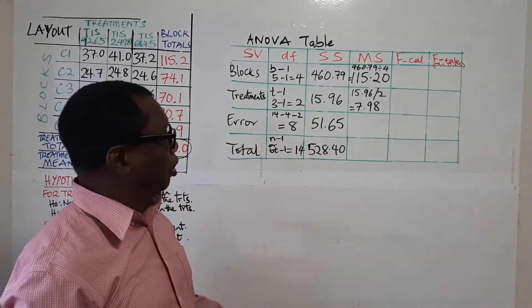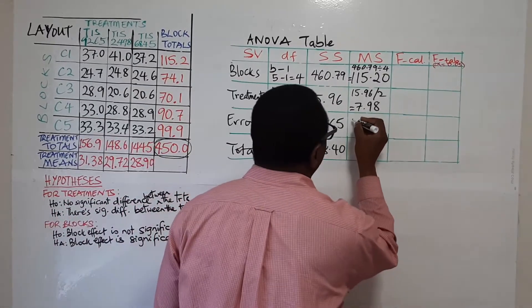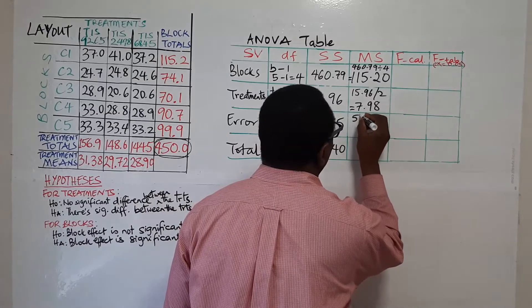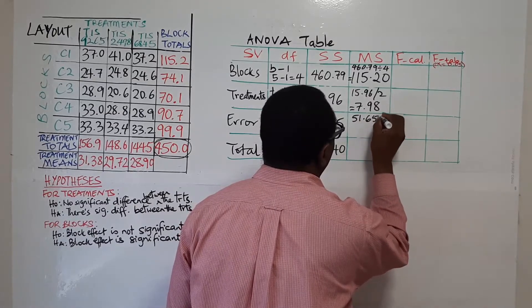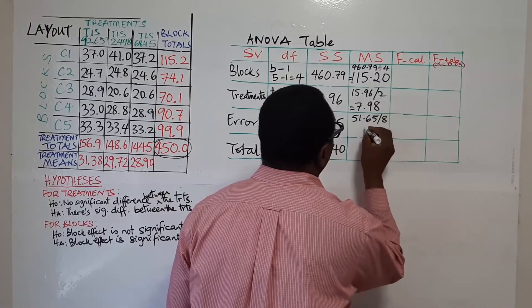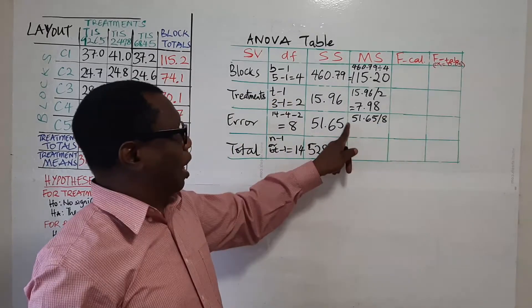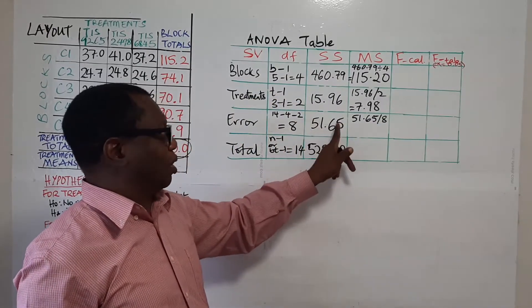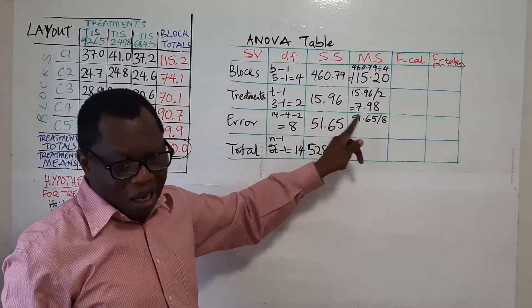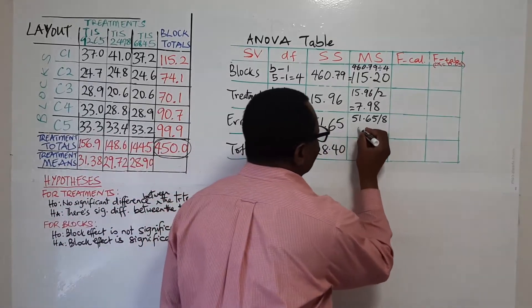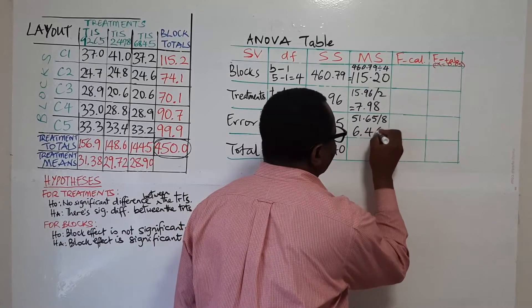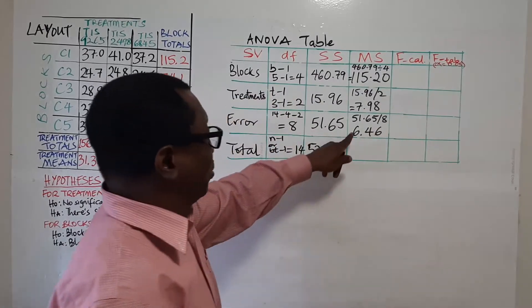That gives you 7.98. And the final one, you divide 51.65 by 8 and that gives you 6.46. So that's the mean squares for error.